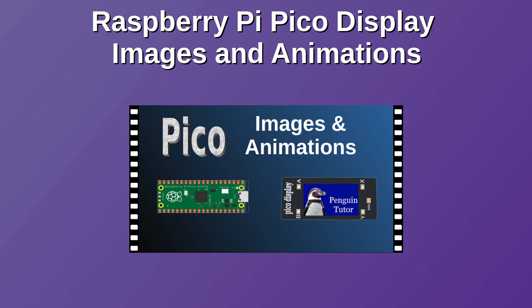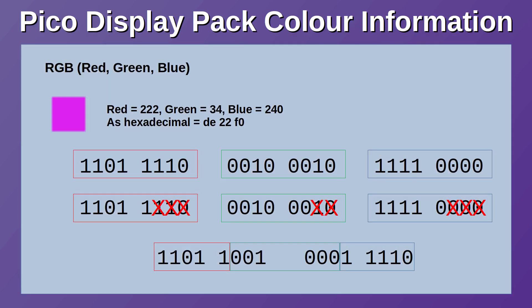In my earlier video I explained how to write data to the Pico display screen. This is done by creating a byte array which holds the colour information for each pixel. I also talked about how the colour information is reduced from 3 bytes per pixel to 2 bytes. This is shown in this visual, but for more details see my other video or the webpage linked in the description.